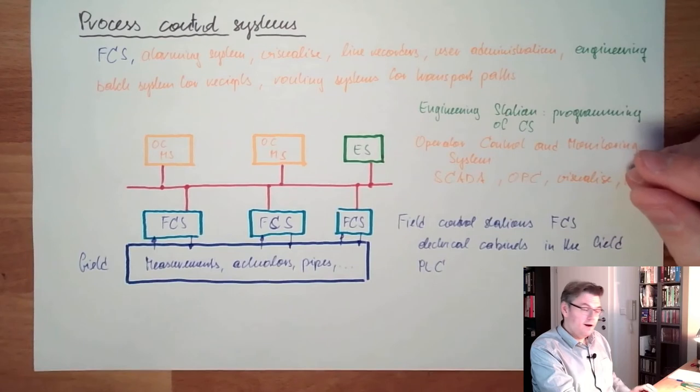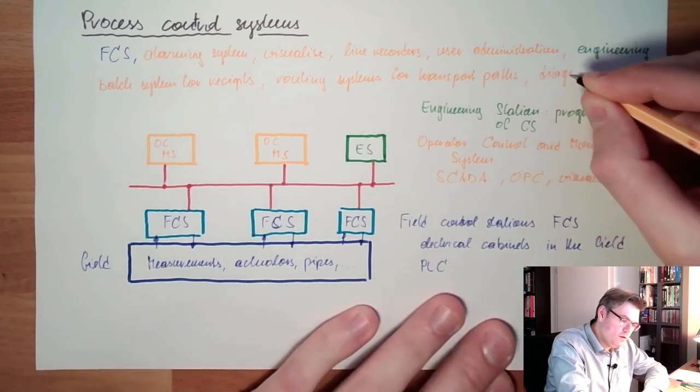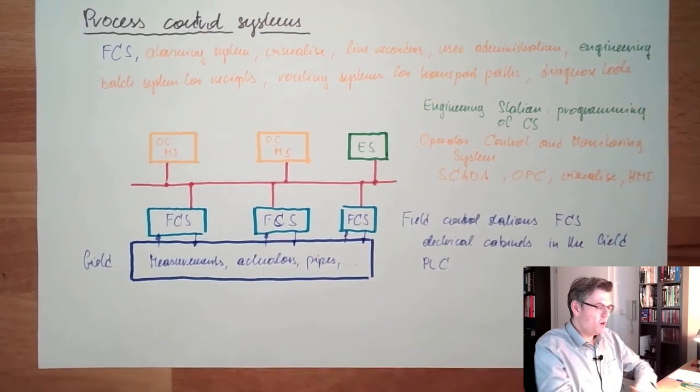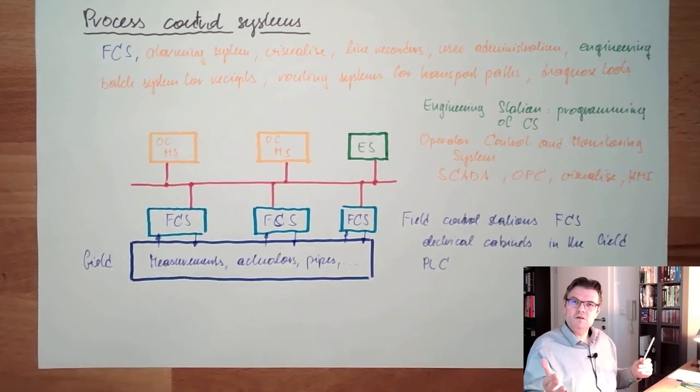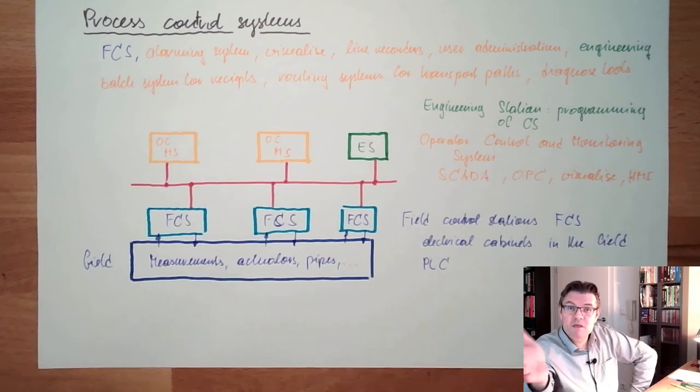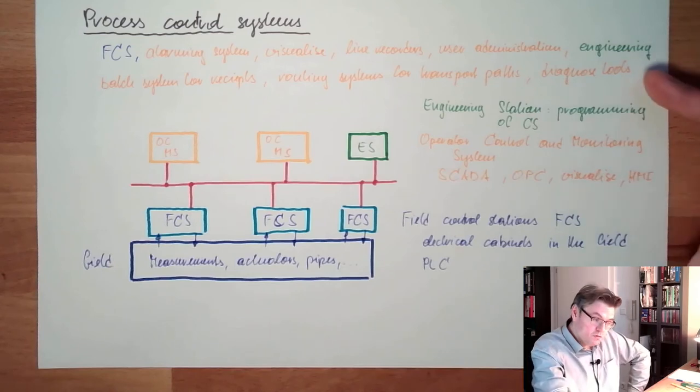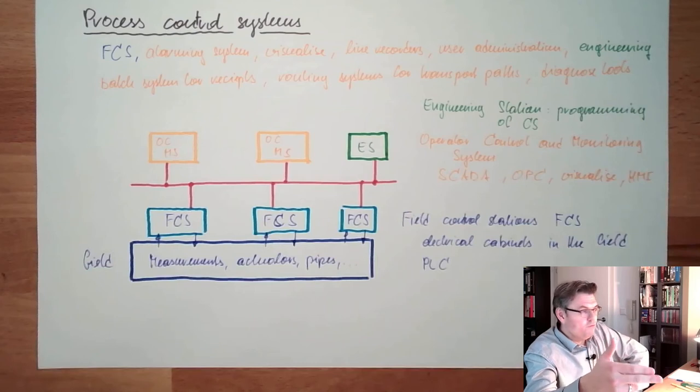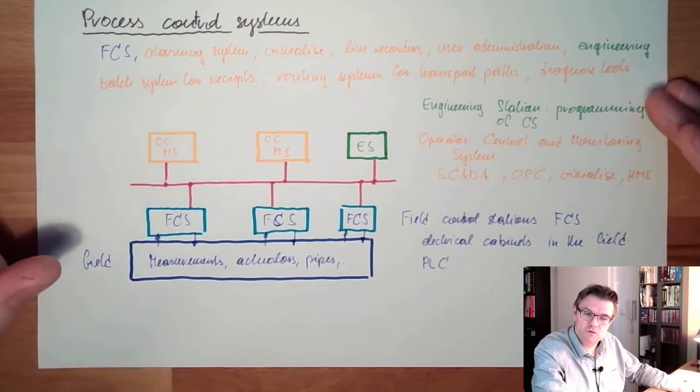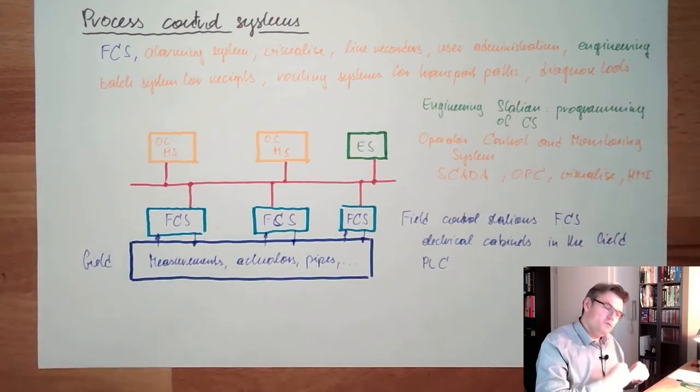Diagnostic tools are also available. Is my process still within a certain range? Is there maybe some wear at the valve or something? Look at the process, see if it's changing over time even with the same positions of actuators. Then maybe you can make a technical diagnosis if you have to shut it down for doing maintenance, cleaning something. This is also a module, a possible module of process control systems which is used very often.